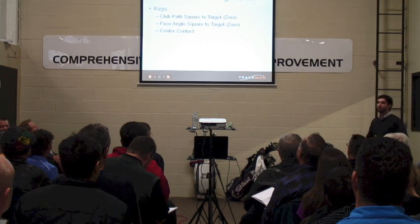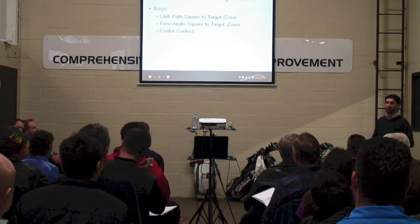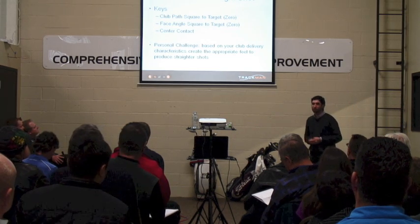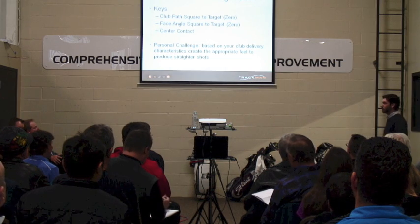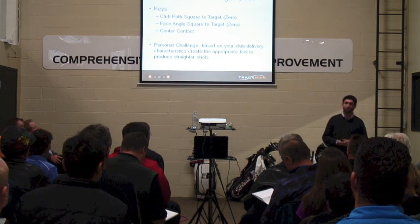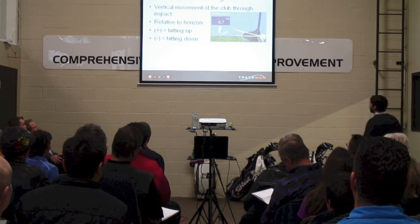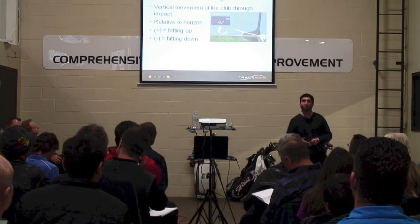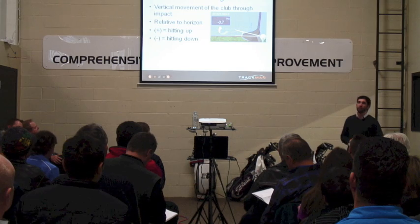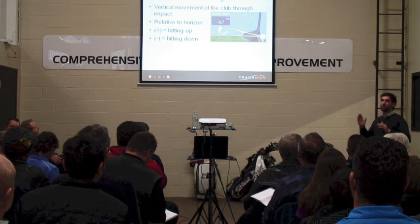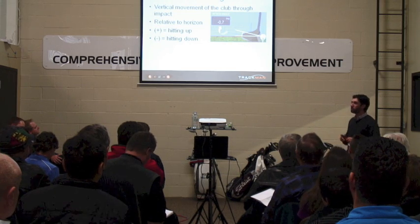Can you coach yourselves when utilizing the technology, if you know just to look for those few parameters? Based on your current club delivery characteristics, can you create the appropriate feelings to make your ball fly straighter? Absolutely. So we're talking curvature. Who wants distance? Here's a variable that affects distance, especially with the driver — this is now talking about the vertical, up and down. Positive is a reference to up: the club's traveling up when it collides with the golf ball; negative means the club is traveling down. There's a parameter that goes hand in hand with this called dynamic loft — the actual loft of the golf club at impact.